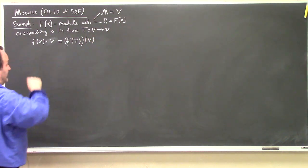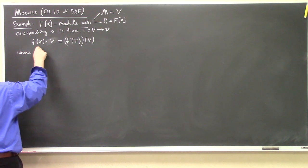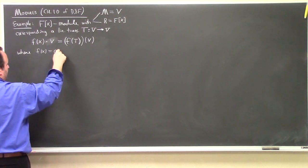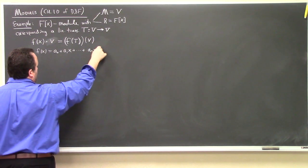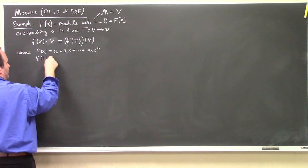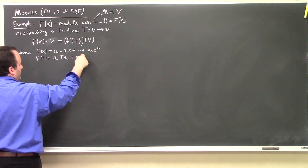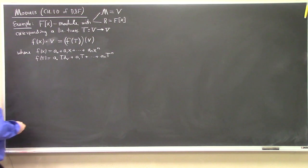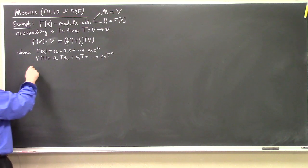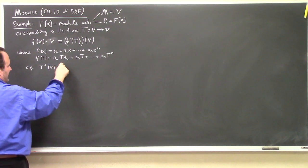The parentheses are sometimes omitted. If f(x) = a₀ + a₁x + ... + aₙxⁿ, then f(T) means a₀ times the identity on V, plus a₁T, plus ... plus aₙTⁿ, where powers of an operator are defined in terms of composition. For example, T² acting on v means T(T(v)).